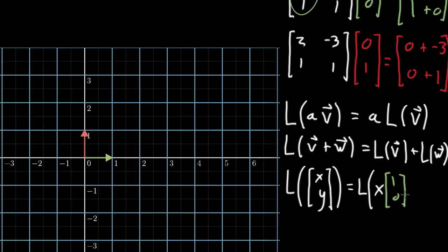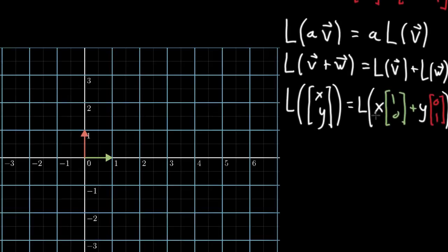plus y times that second basis vector, 0, 1. And because of these two properties of linearity, if I can split it up like this, it doesn't matter if I do the scaling and adding before the transformation or if I do that scaling and adding after the transformation and say that it's x times whatever the transformed version of 1, 0 is.